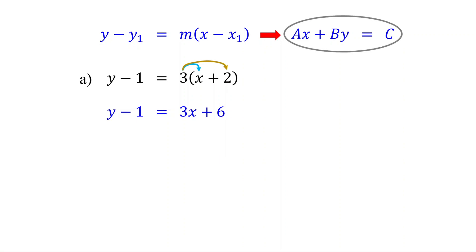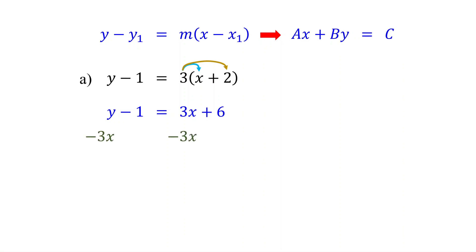Notice that in standard form, the variable terms are on the left side, and the constant is on the right side. So our next step is to collect the variable terms on the left side of the equation and the constants on the right side. Subtract 3X from both sides, and add 1 to both sides.